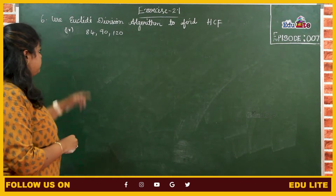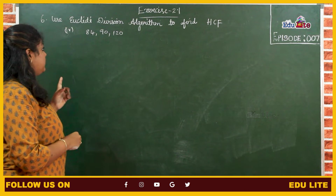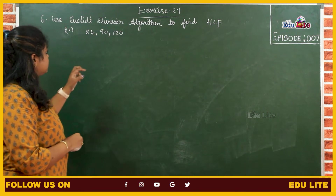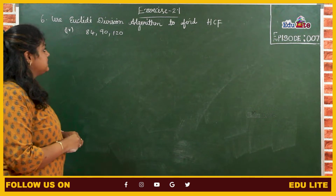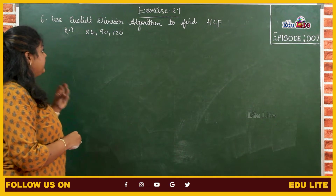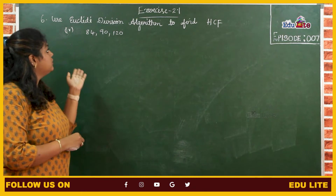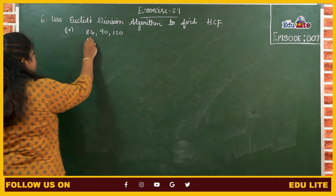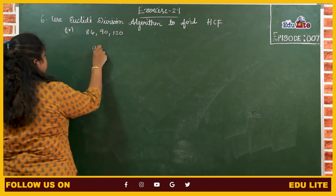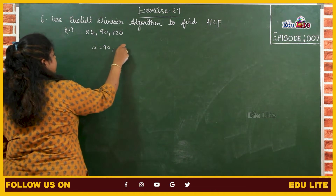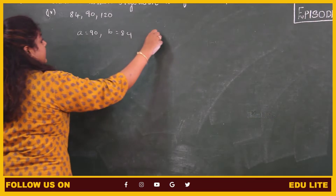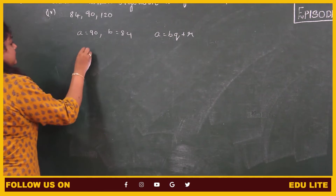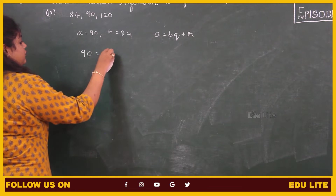Next, we have to find the HCF of 3 numbers. When it is given as 3 numbers, we have to first consider the first 2 numbers, and after getting the HCF of the first 2 numbers, we have to find the HCF with the third number. Among the 2 numbers, 90 is the largest number, so A equals to 90 and B equals to 84.